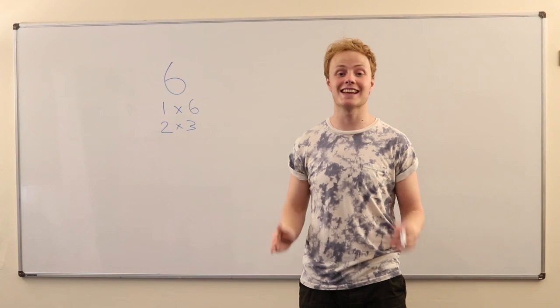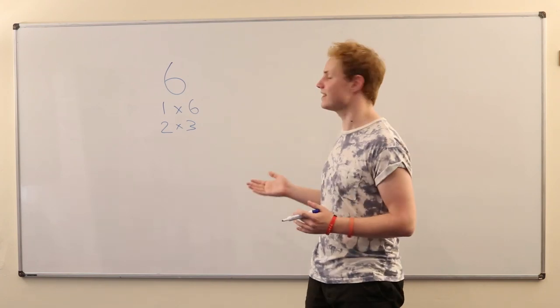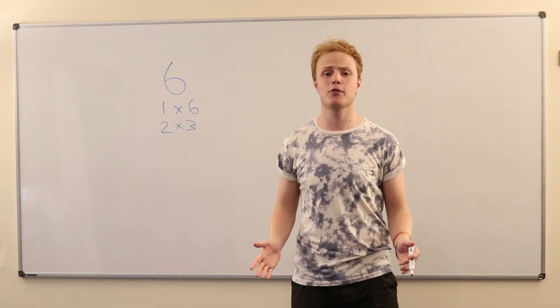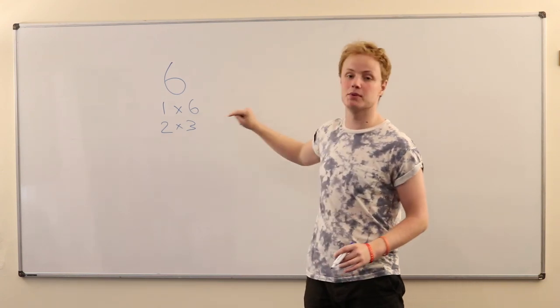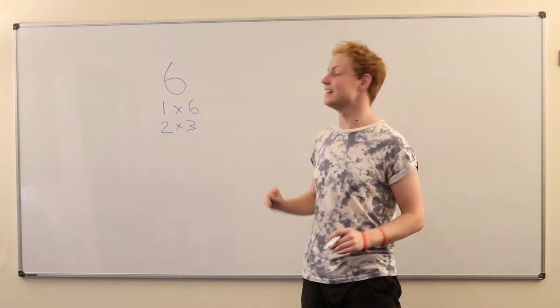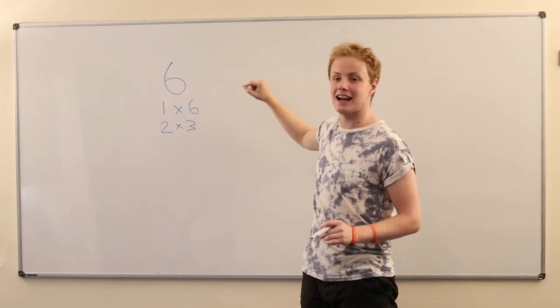Well, let's have a look at the number six, which is our first perfect number. What is it about six that makes it so perfect? Well, it's something to do with the factors or divisors of six. These are the numbers that go into six exactly. So we've got one, two, three, and six.